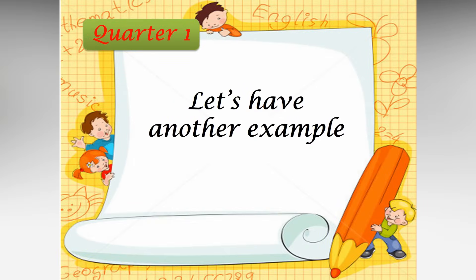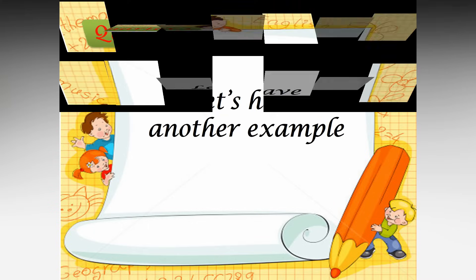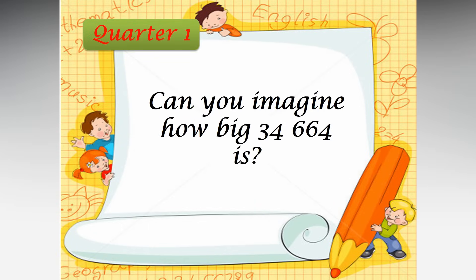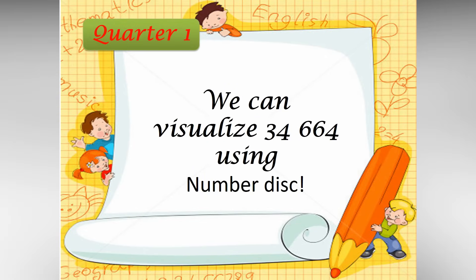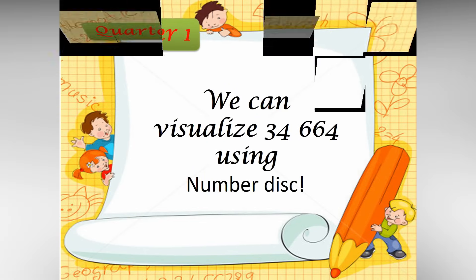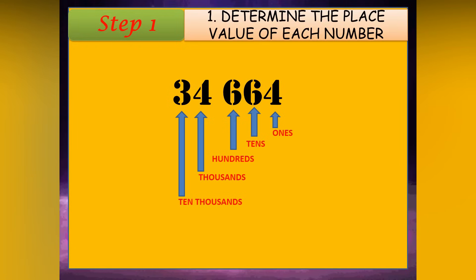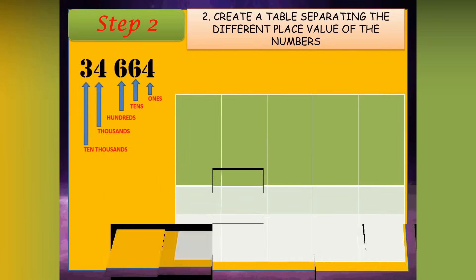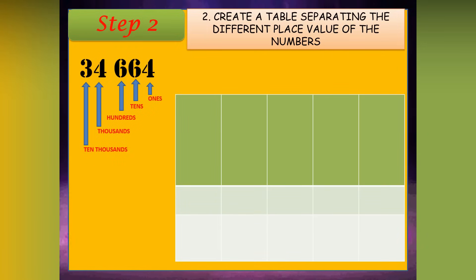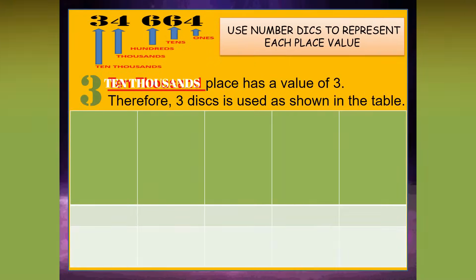Let's have another example. Can you imagine how big 34,664 is? We can visualize 34,664 using number discs. Step 1: Determine the place value of each number — 1s, 10s, 100s, 1,000s, 10,000s. Step 2: Create a table separating the different place values of the numbers. Step 3: Draw the discs.